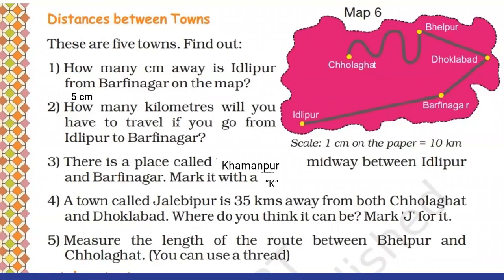Next question: how many kilometers will you have to travel if you go from Idlipur to Barfinagar? The distance on the map is five centimeters. The scale given at the bottom says one centimeter on the paper equals ten kilometers. So five centimeters will be 5 × 10 = 50 kilometers. The distance from Idlipur to Barfinagar is 50 kilometers.